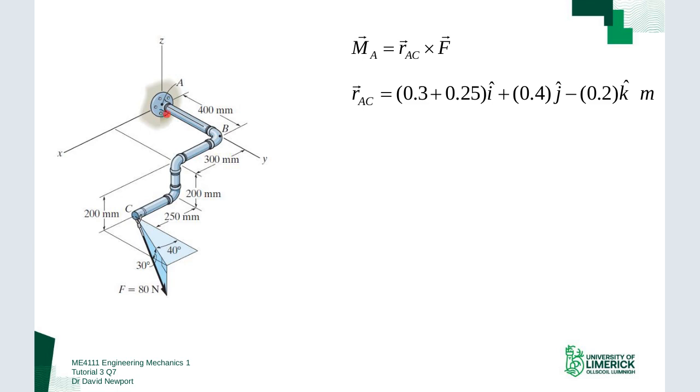The displacement vector is from where you're taking the moment to anywhere on the line of action of the force. So it's from point A to anywhere on the line of action of this force, and the most convenient point we have is point C where it's attached to the pipe assembly. So I want to figure out the displacement vector from here up to here, and I get this by inspection.